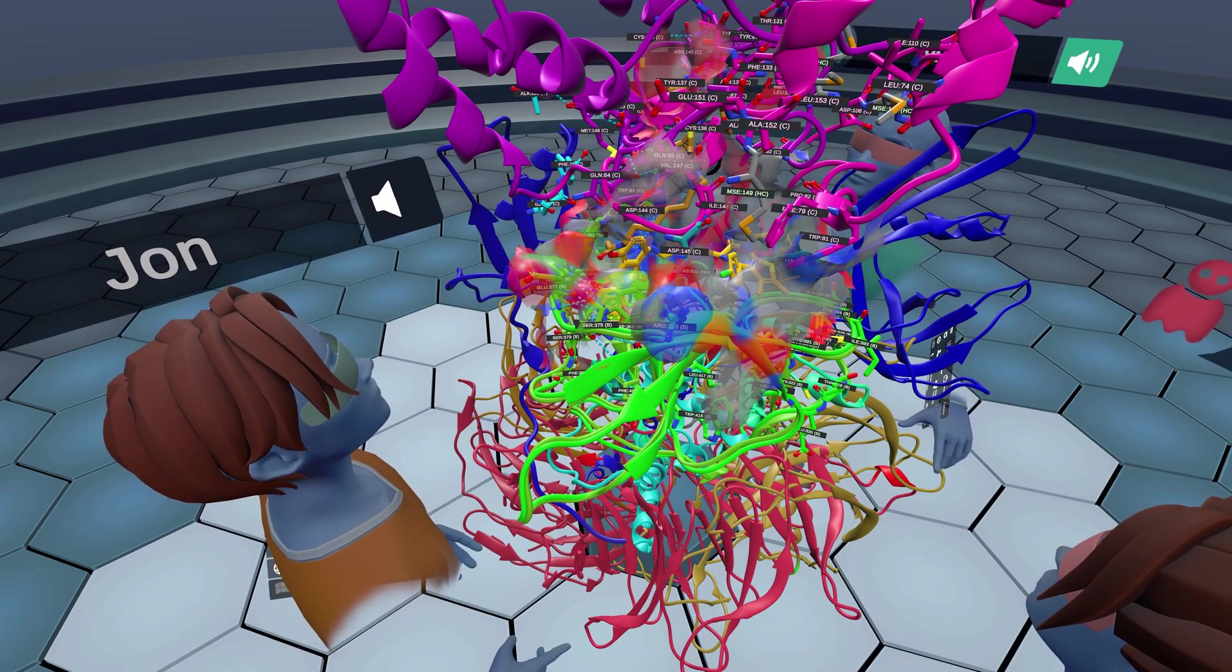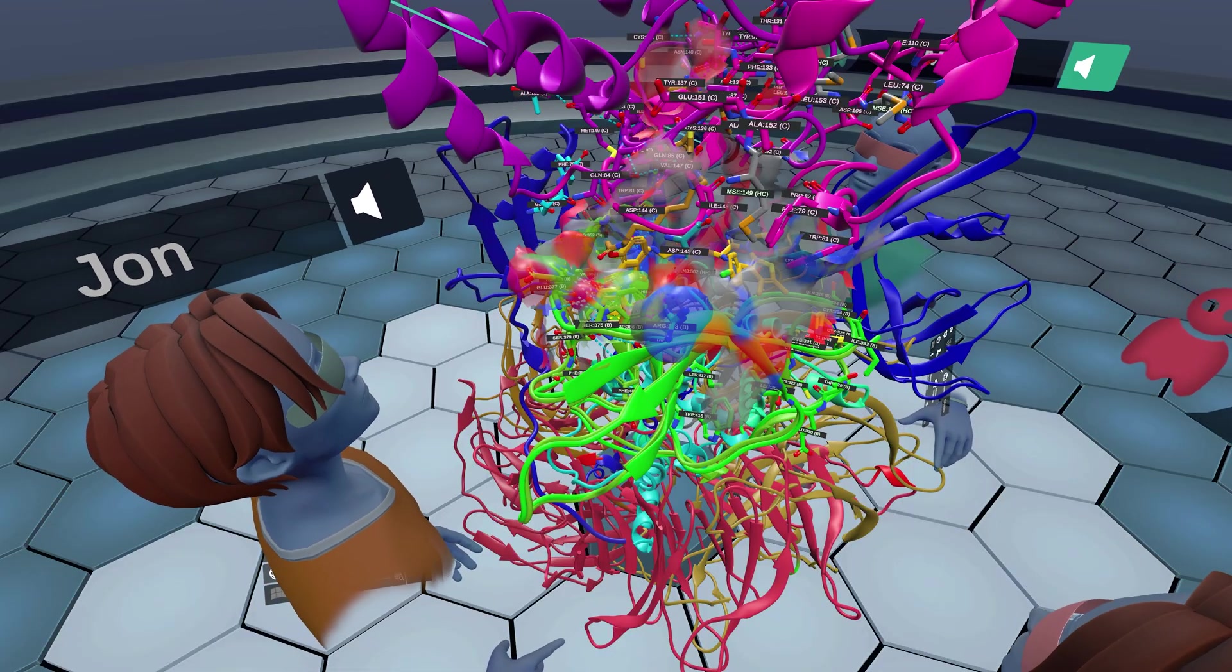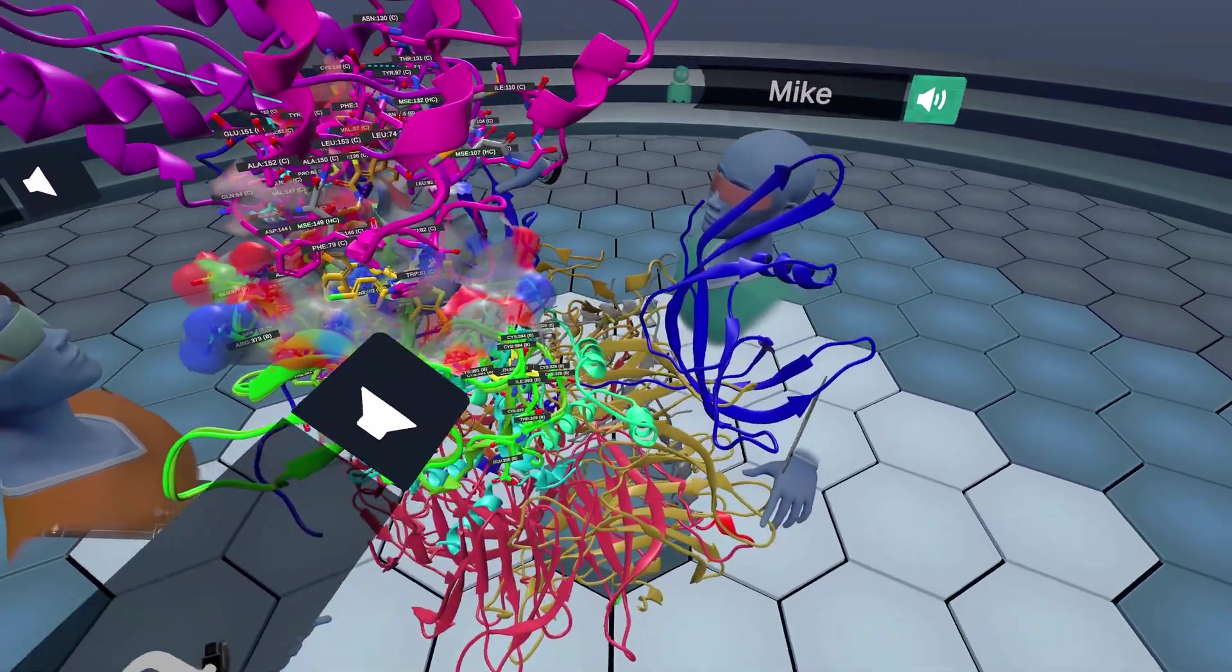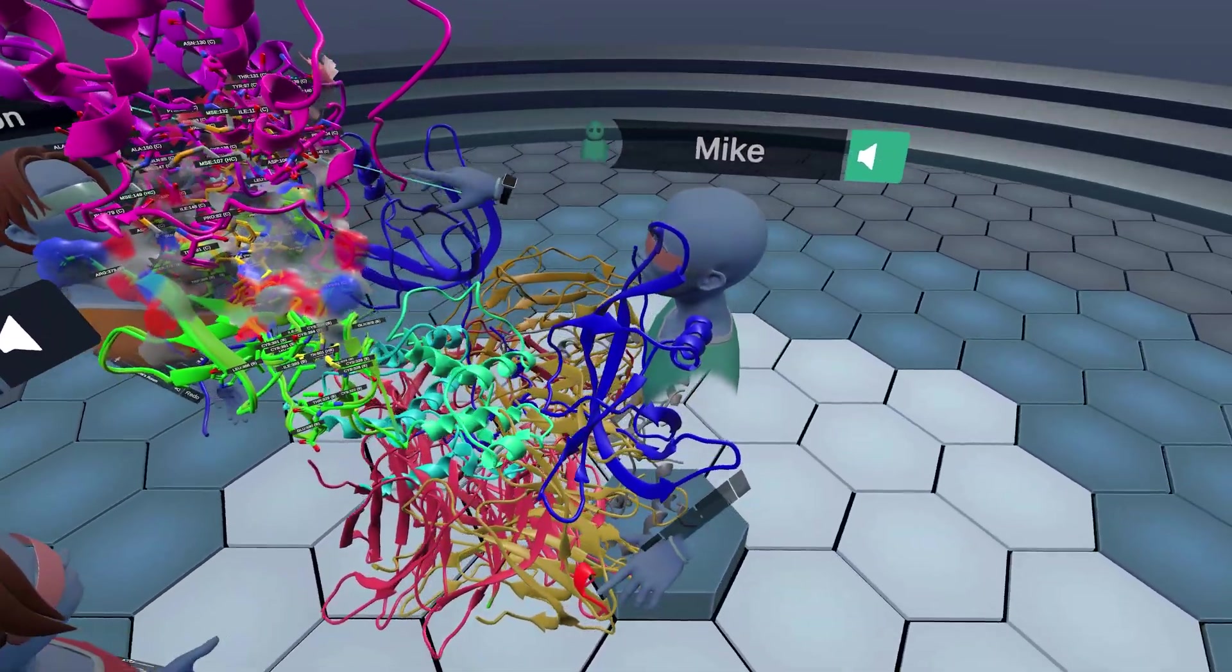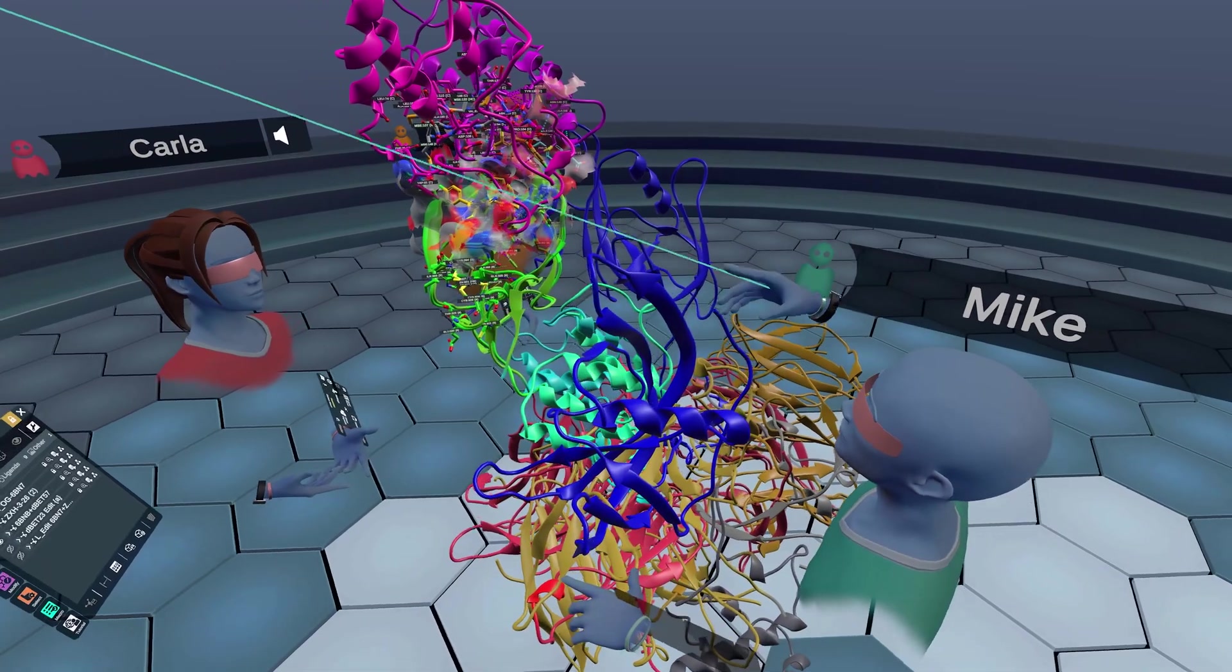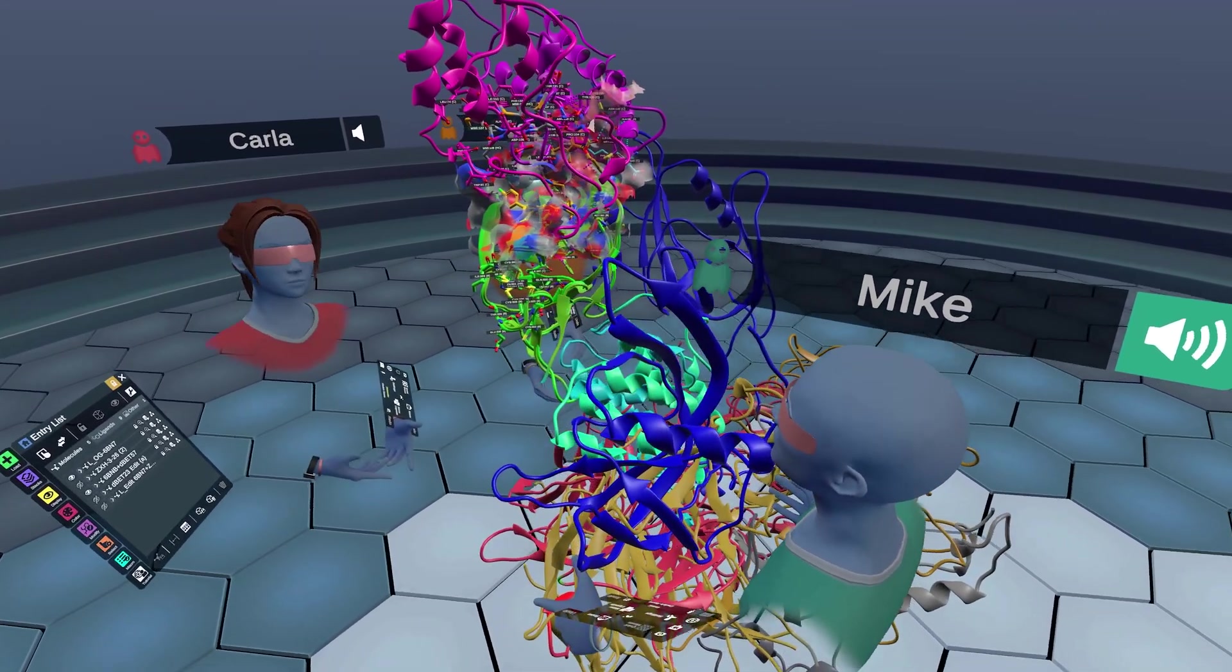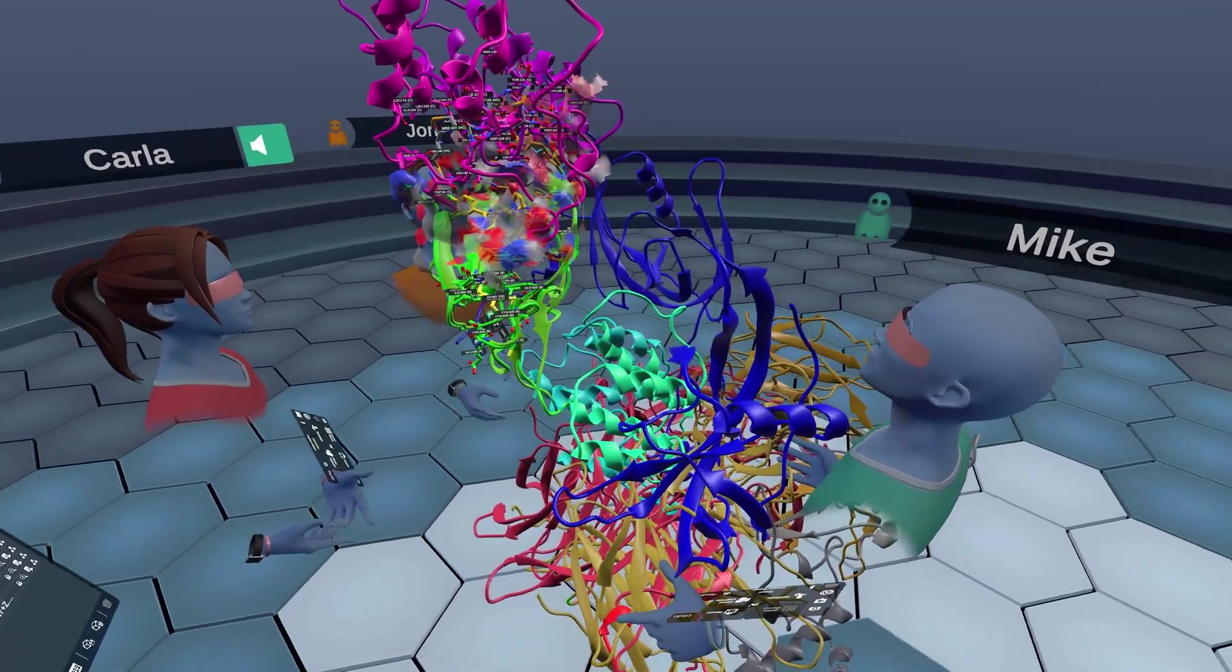As you pointed out, Carla, the cereblon N-terminal domain has shifted. But in DBET23, there are important interactions up here that we see between BRD4, BD1, and the N-terminal domain. And now, the N-terminal domain is way out here. And yet, it's still a potent degrader. Yeah. Yeah, that is a really good point.